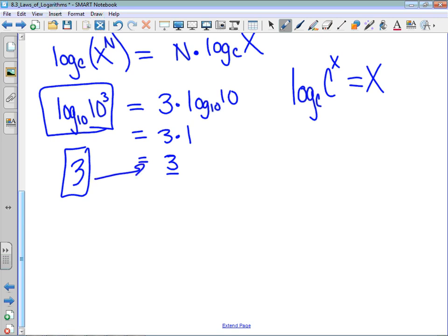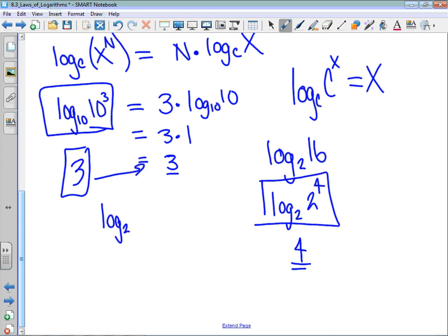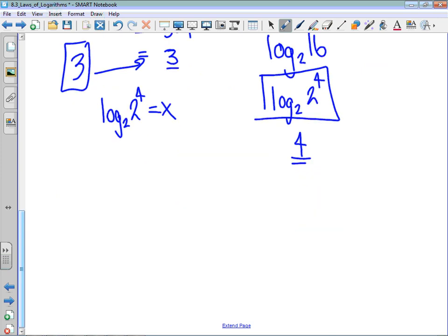Where this is useful is, let's say I did have to take log base 2 of 16. Well, what I could do in this example is I could write 16 as 2 to the power of 4. Log base 2 of 2 to the power of 4 is 4. And I would like to show that just a little bit more. Let's throw a variable in there. So log base 2 of 2 to the power of 4, let's make it equal to x. Keep in mind that 2 to the power of 4 in its entirety is the argument. If I switch that to exponential form, I get 2 to the power of x is equal to 2 to the power of 4. So x has to be 4, which is the value of our logarithm.